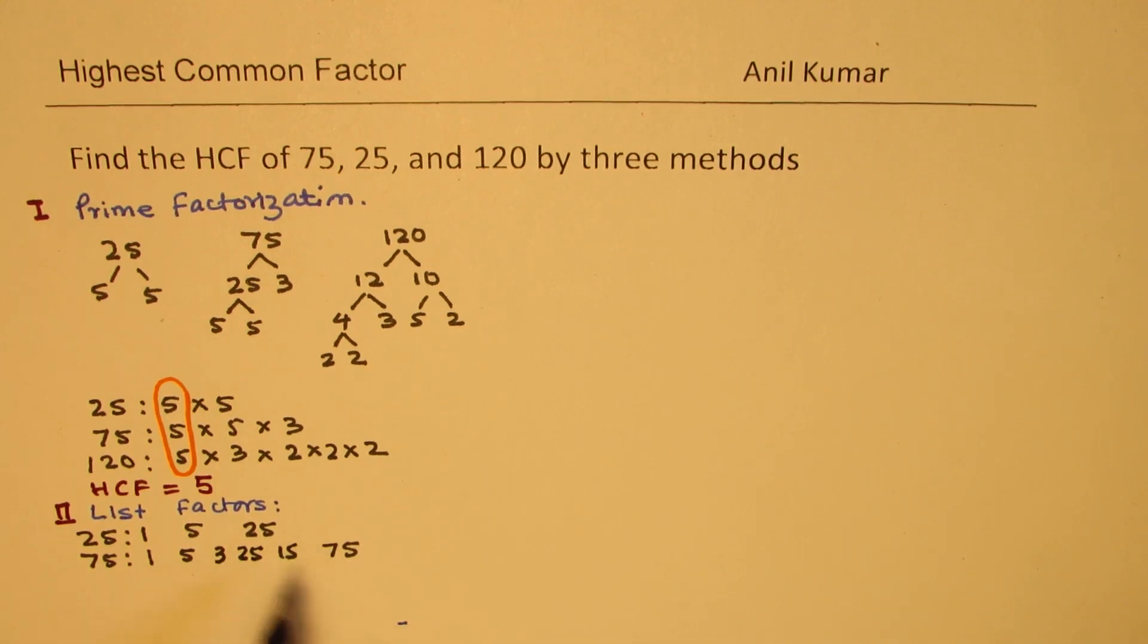I missed 3 first. So, you have to write all the factors. Similarly, for 120, you could write down the factors 1, there are many factors with 120, so let me have more space here.